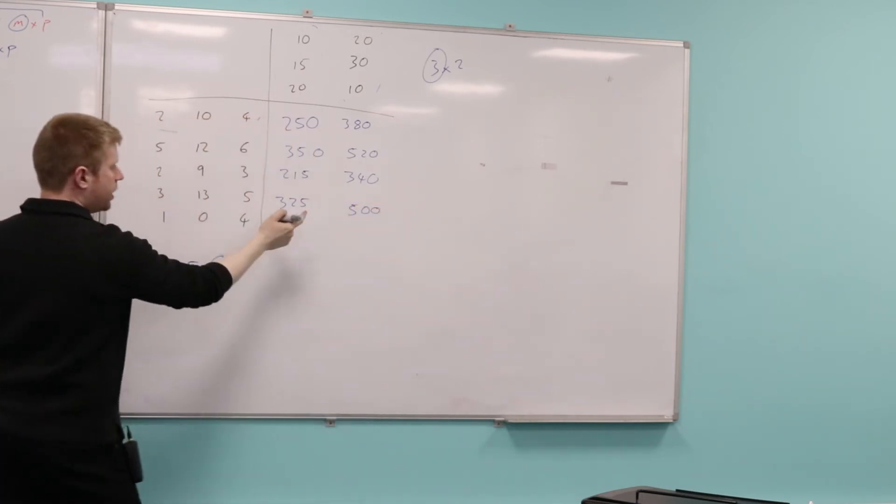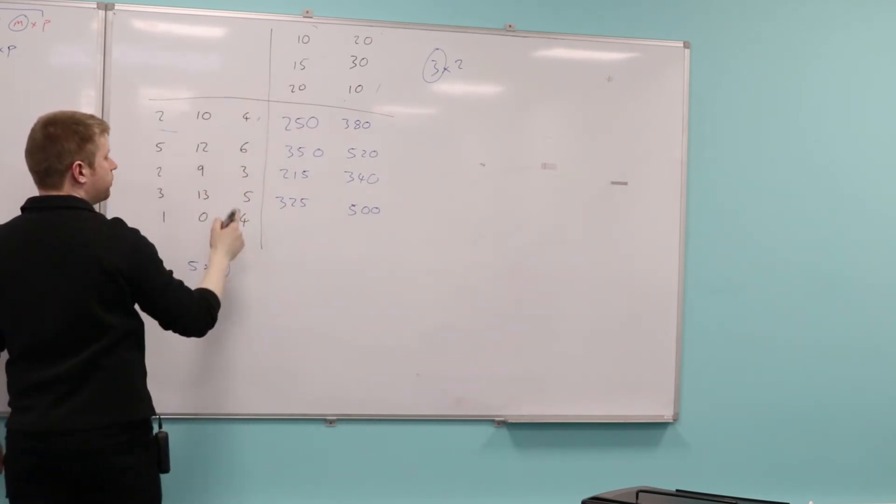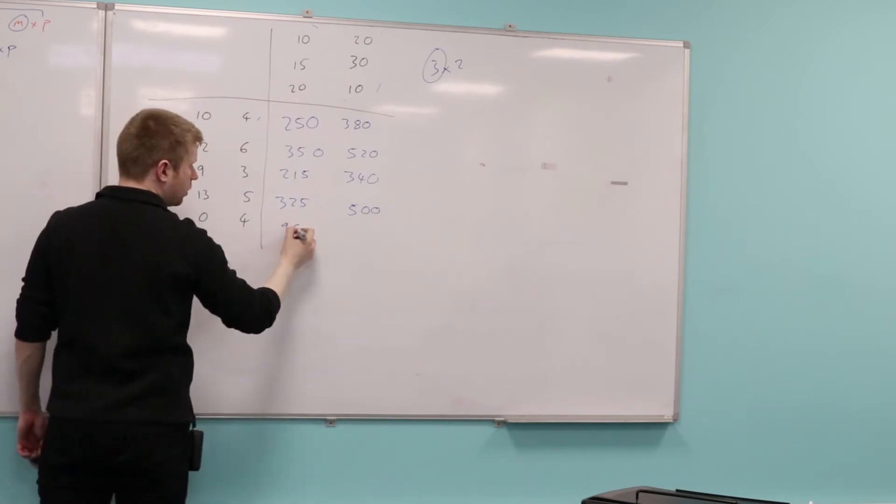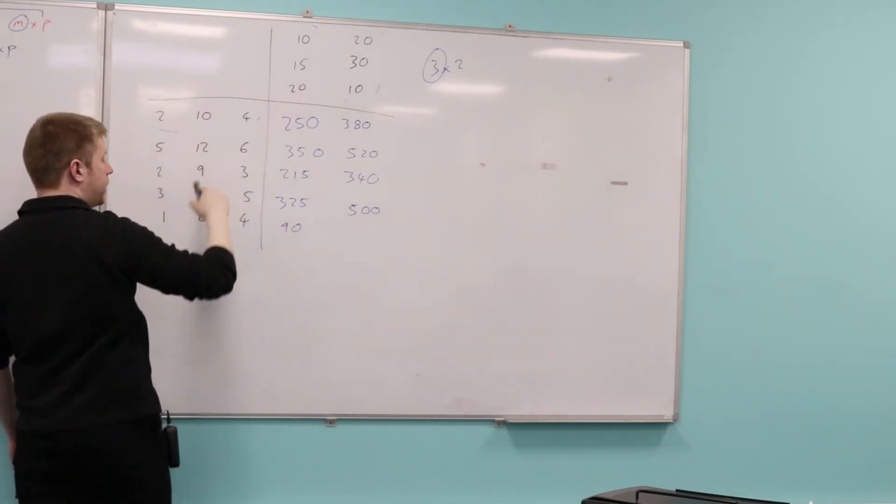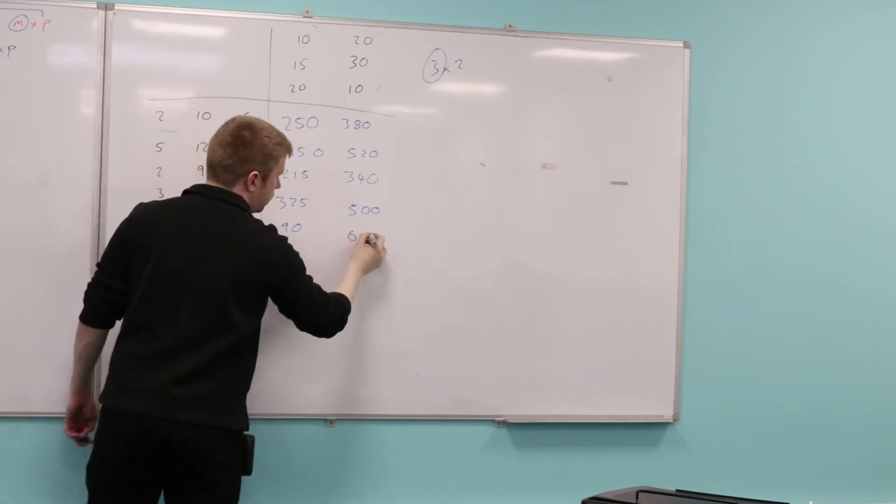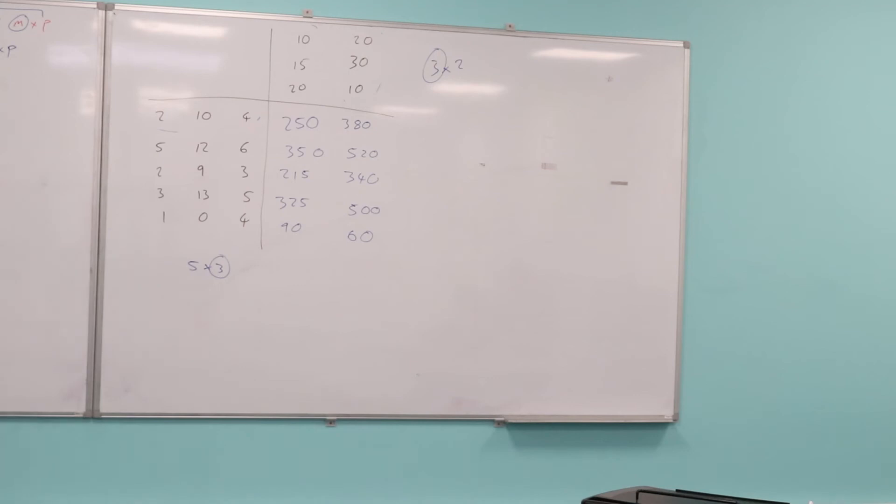Can I just take any word for this? This one here, 1 times 10, 0 times 15, 4 times 20 is going to be 90. And this element here would be 1 times 20, 0 times 30, 4 times 10, is that 60? Yes. Yeah, cool. There you go. That's the resulting matrix.